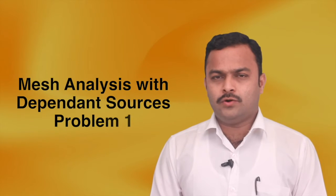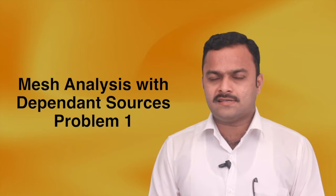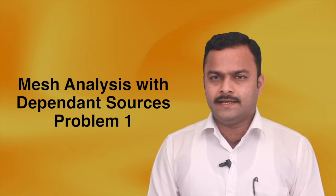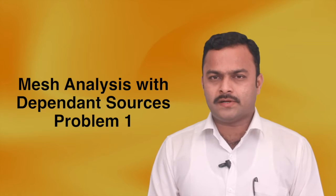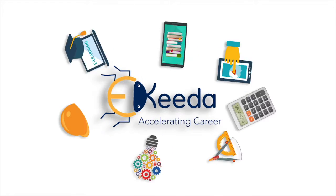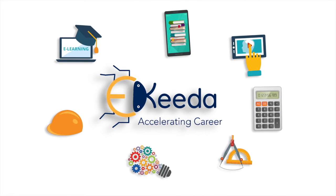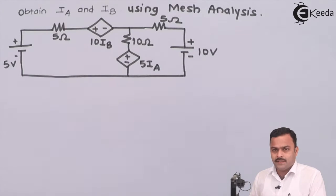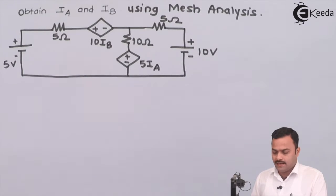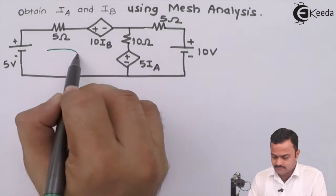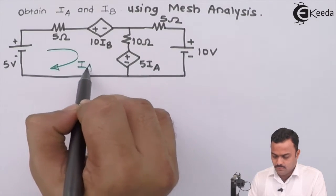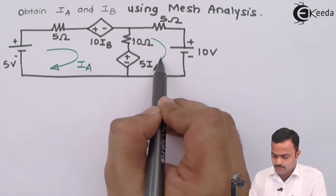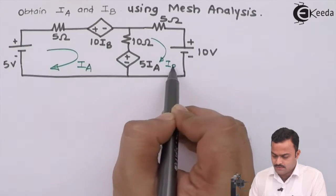In this video, we are going to apply mesh analysis technique in a circuit where dependent sources are also present along with independent sources. The problem is: obtain Ia and Ib using mesh analysis. Loop 1 current is Ia and Loop 2 or Mesh 2 current is Ib.